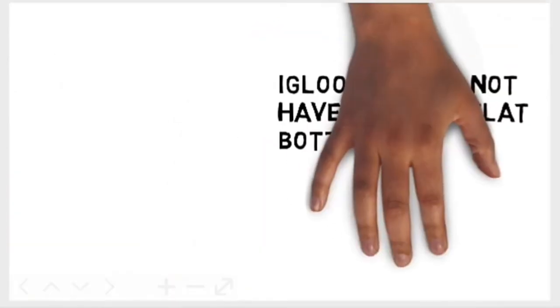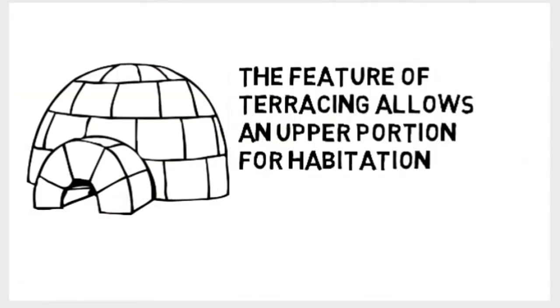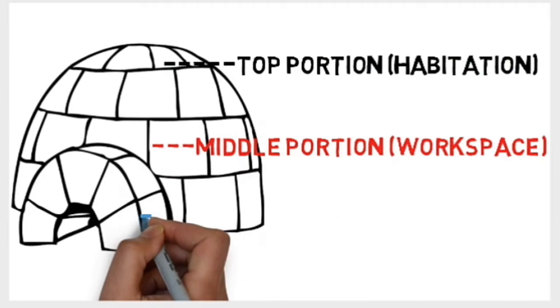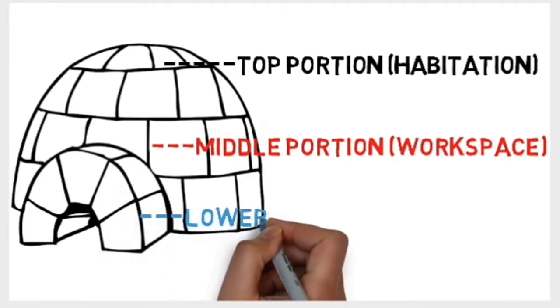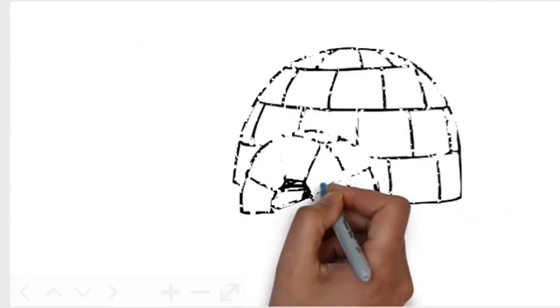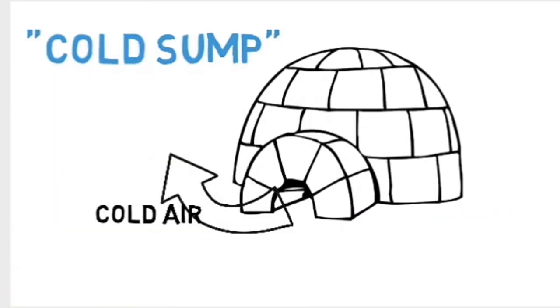Igloos also do not have a single flat bottom. Instead, the feature of terracing allows an upper portion for habitation, a middle portion for fire building, and a lower portion for the escape of the coldest air, a feature referred to as cold slump.